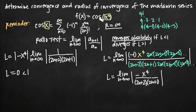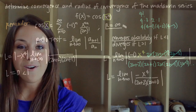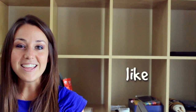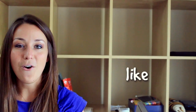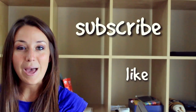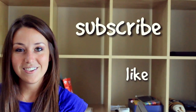In conclusion, the Maclaurin series of cosine of x squared is absolutely convergent and the radius of convergence is equal to infinity. I hope you found that video helpful — if you did, like this video and subscribe to be notified of future videos.